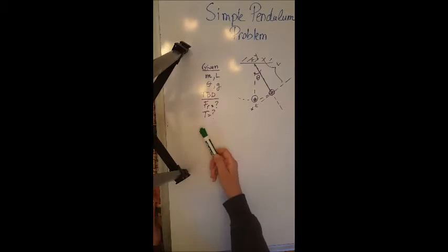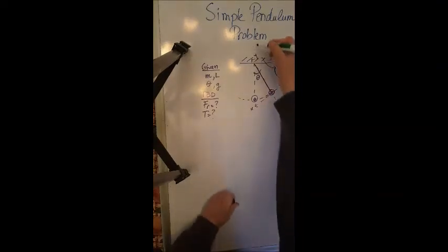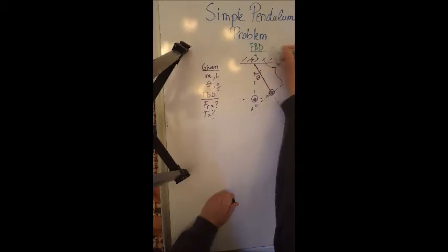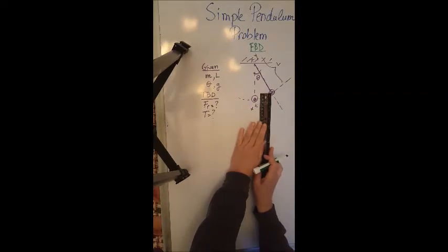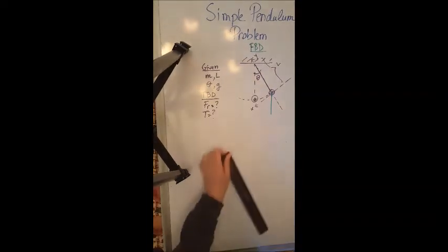Let's start with a free body diagram to see what are the forces applied on the object. First of all we have the force of gravity, which is vertically down, it's always vertically down.